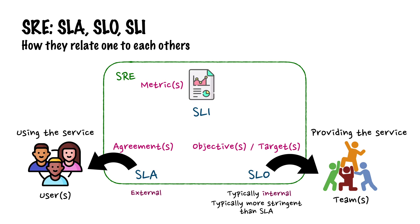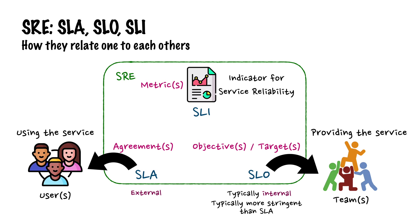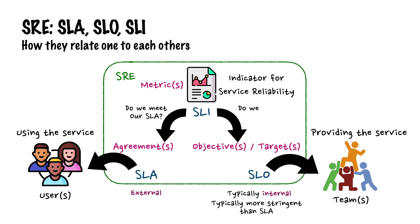SLIs are the metrics to indicate how reliable the service is at each specific point in time. SLIs can be used as an indicator to show the current value so that the team knows whether they still meet their SLA and whether they still meet their SLO.